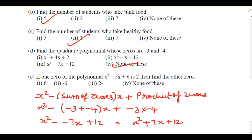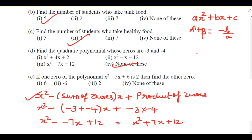If one zero of the polynomial x² - 5x + 6 is 2, we need to find the other zero. We know from the chapter that for a quadratic polynomial ax² + bx + c with zeros alpha and beta: sum of zeros = -b/a, and product of zeros = c/a. These are the key formulas to remember.